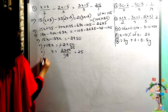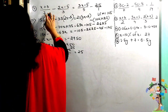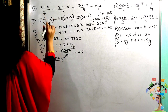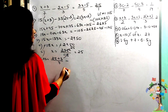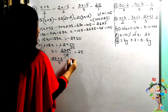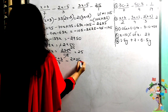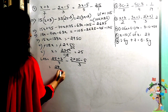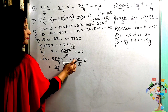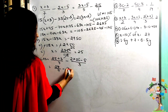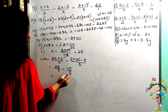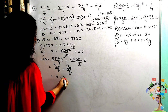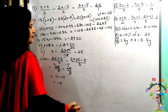Left hand side: (x + 3)/7 − (2x − 5)/3. Substituting x = 25: (25 + 3)/7 = 28/7 = 4. Then (2×25 − 5)/3 = (50 − 5)/3 = 45/3 = 15. So 4 − 15 = −11.